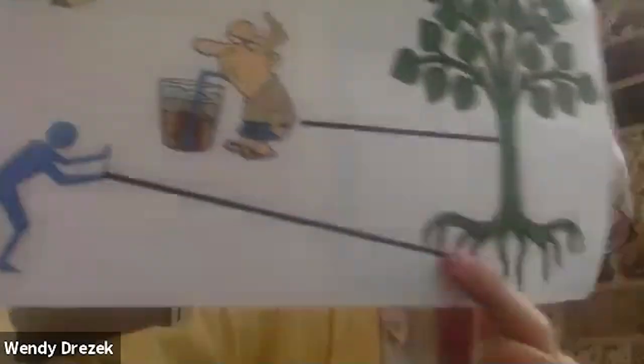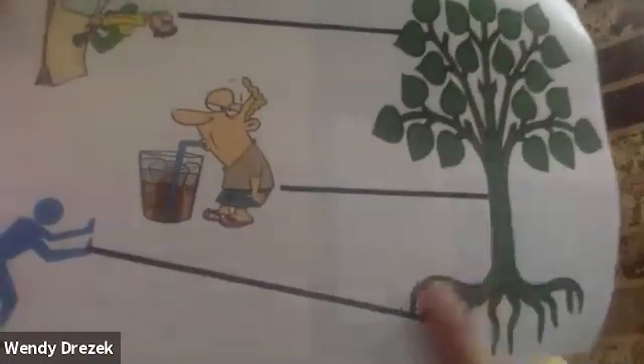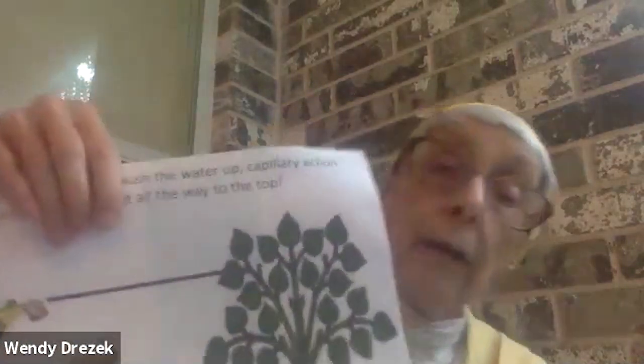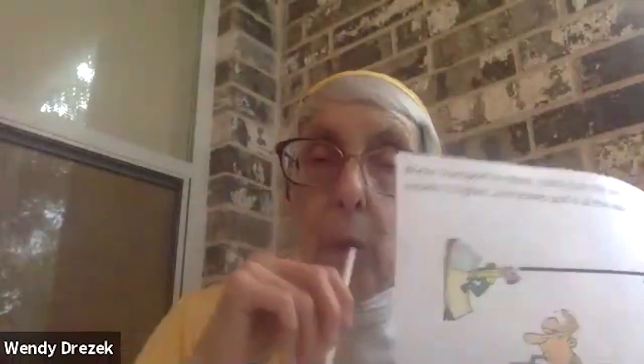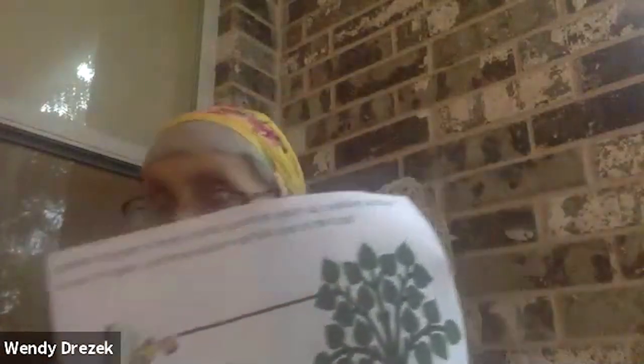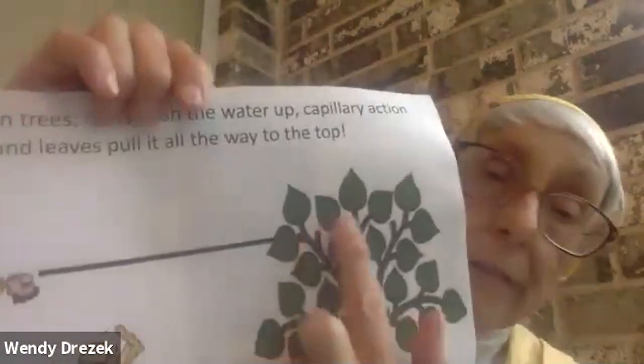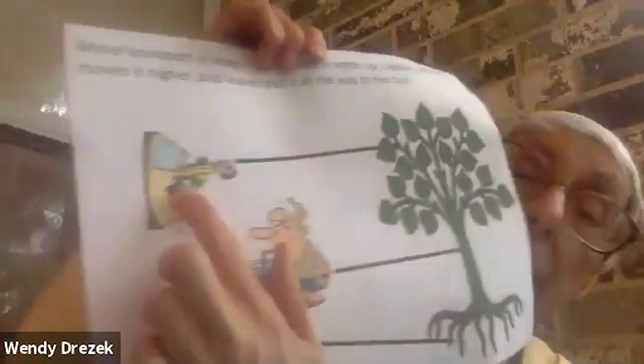At the bottom of the tree, at the roots, we have roots pushing the water up. Push, push, push. Then in the trunk of the tree, it's like straws — lots of little straws inside that trunk — sucking the water up. Let's be the little straws sucking the water up. The main thing that takes the water to the top of the tree is leaf pull. Let's pull the water up to the top of the trees. That's how water moves in trees.